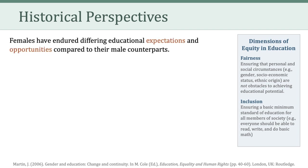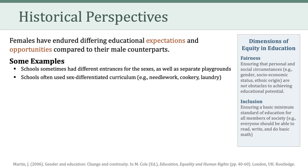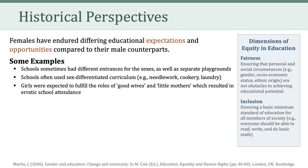We need to recognize that females have endured differing educational expectations and opportunities compared to their male counterparts. For many of you in this class, this is a no-brainer — you have actually lived and experienced these differing expectations and opportunities. But for some folks, you may not be as familiar with some of these aspects of the history of education. So let's take a look at some ways in which education has been gendered over the years. For example, schools sometimes had different entrances for the sexes, as well as separate playgrounds for boys and girls. Schools often used sex-differentiated curriculum, such as focusing on needlework, cookery, and laundry for females, as opposed to reading, writing, and arithmetic. Girls were also expected to fulfill the roles of good wives and little mothers, which resulted in erratic school attendance.